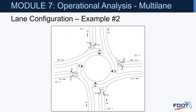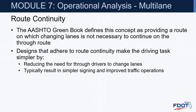Unless traffic demand for a given approach indicates a clear need for an exclusive left turn lane, option one is preferred for simplicity of design. It's expected to accommodate both peak and off-peak travel demand and provides route continuity so drivers are not forced to change lanes before entering the intersection. The green book defines route continuity as providing a route on which changing lanes is not necessary to continue on the through route, which typically results in simpler signing and improved traffic operations.